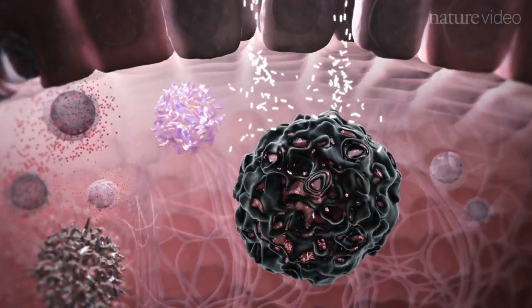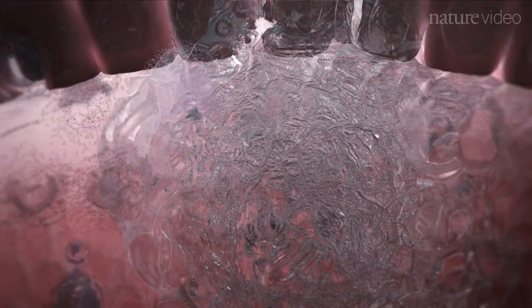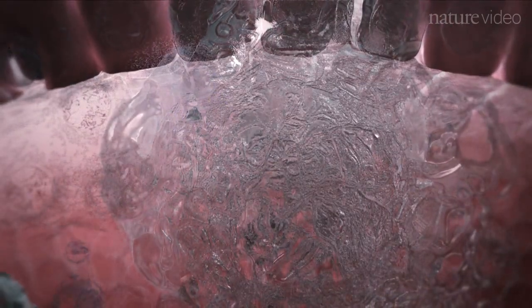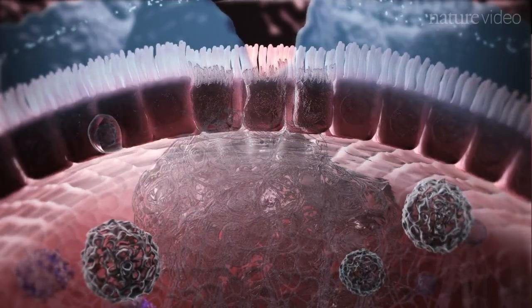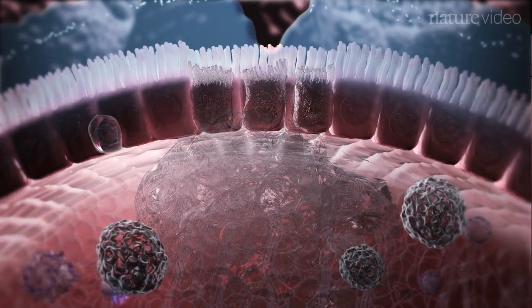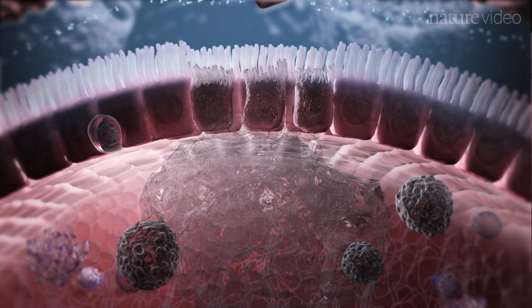One weapon in the neutrophil armory is the ability to undergo a dramatic form of self-destruction called NETosis. This leaves behind a jumble of DNA saturated with enzymes called a neutrophil extracellular trap. Although this can effectively destroy bacterial invaders and plug any breaches in the epithelial wall, it also causes collateral damage to tissues.